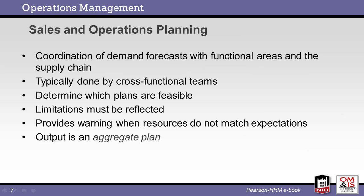Sales and operations planning links external demand with internal capability. Plans affect the entire supply chain. The goal is to determine feasibility, limitations, and control limits. The end result would be the aggregate plan.